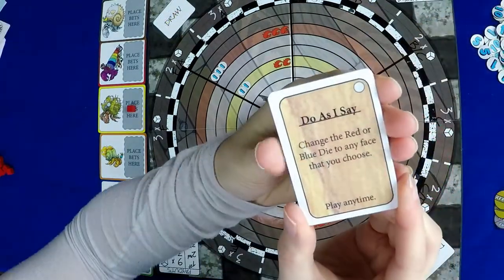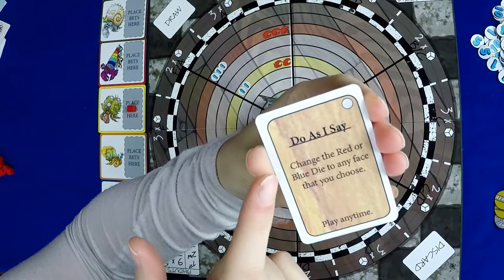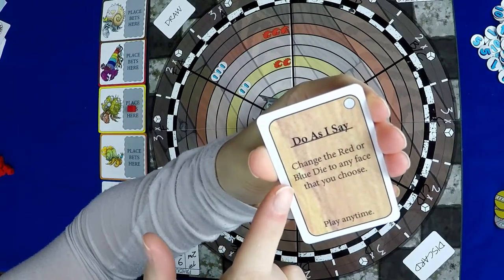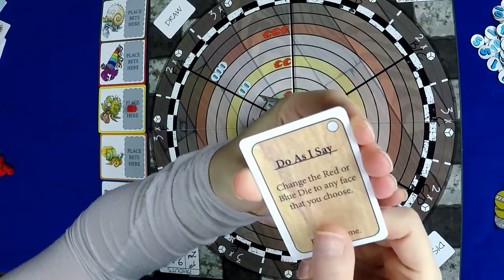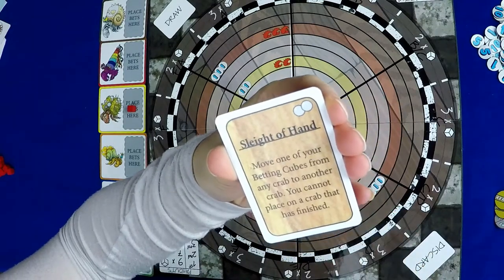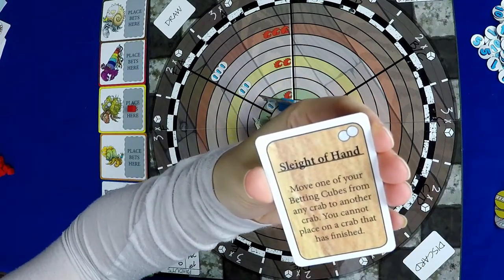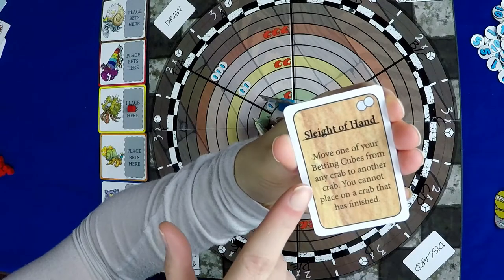Some of the action cards, like do as I say, can affect the die rolls. These cards can be played by any player at any time. Other cards can be played only on your turn, like sleight of hand, that lets you move one of your betting cubes to another crab.